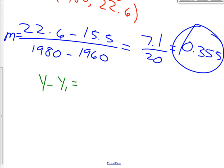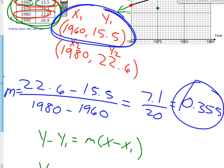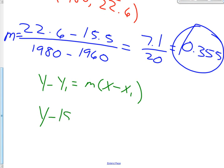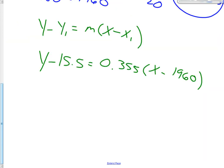y minus y1 equals m times the quantity x minus x1. So y minus the y-coordinate, which is 15.5. That equals our m, which is 0.355 times the quantity x minus the x-coordinate, which is 1960.